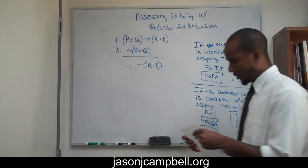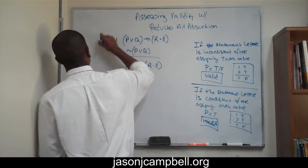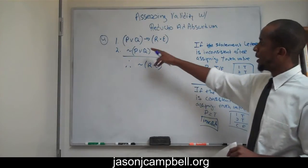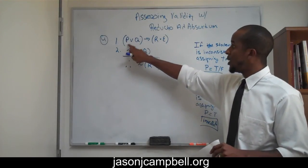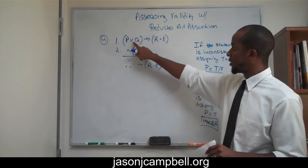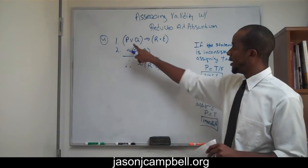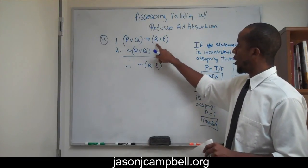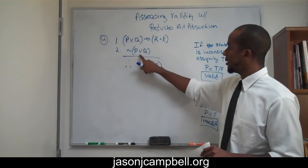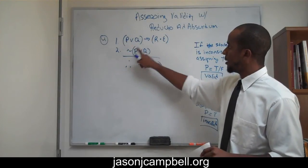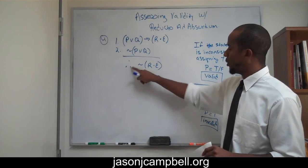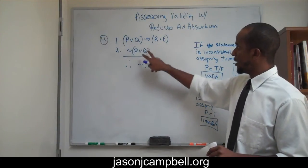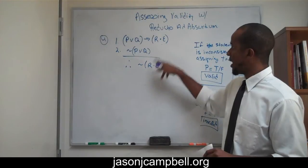This is number four. If P or Q — remember this is a conditional, so it starts if-then — if P or Q, then R and E. Not (P or Q), not this, therefore not that. So: if this, then this; not this; therefore not this.